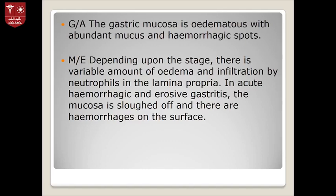Microscopically, depending upon the stage of inflammation, there is a variable amount of edema and infiltration by neutrophils in the lamina propria. In acute hemorrhagic and erosive gastritis, the mucosa is sloughed off and there is hemorrhage on the surface.